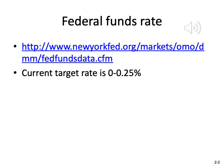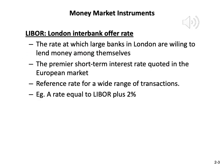The New York Fed website shows the daily update of the Federal Funds Rate. Currently the target rate is from 0 to 0.25%. LIBOR is the rate at which large banks in London are willing to lend money among themselves, very similar to Federal Fund rates, which is the rate large banks in the US lend to each other. LIBOR is the premier short-term interest rate quoted in the European market and is used as a reference rate for a wide range of transactions. For example, when a company issues a corporate bond, they can set the corporate rate as LIBOR plus or minus 2%.